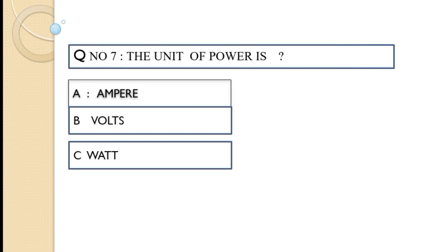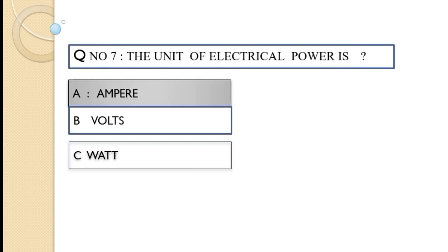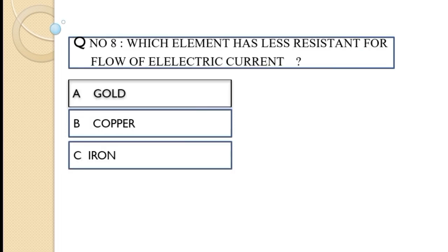Question number seven: The unit of power is — option A ampere, option B watt, option C watt. The correct option of this question is option A, ampere.